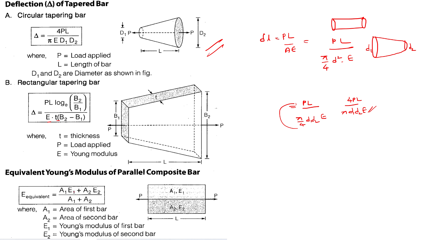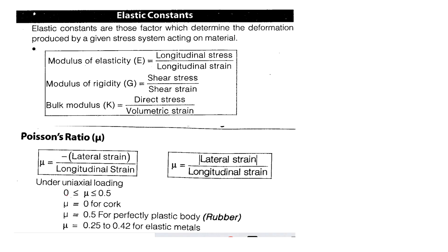After combining two different types of materials, the load is distributed as A1/(A1+A2) and A2/(A1+A2). It is very easy.